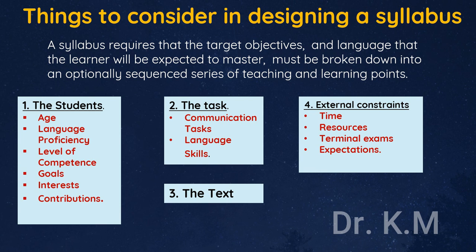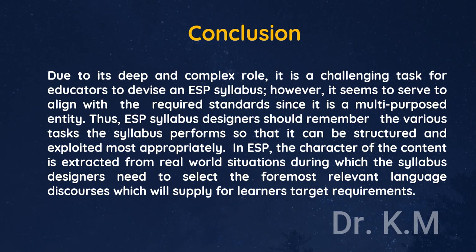Things to consider in designing a syllabus: a syllabus requires that the target objectives and language the learner will be expected to master must be broken down into an optimally sequenced series of teaching and learning points. Key considerations include: 1. The students — age, language proficiency, level of competence, goals, interests, and contributions. 2. The task — communication tasks and language skills. 3. The text. 4. External constraints. 5. Time, resources, terminal exams, and expectations.